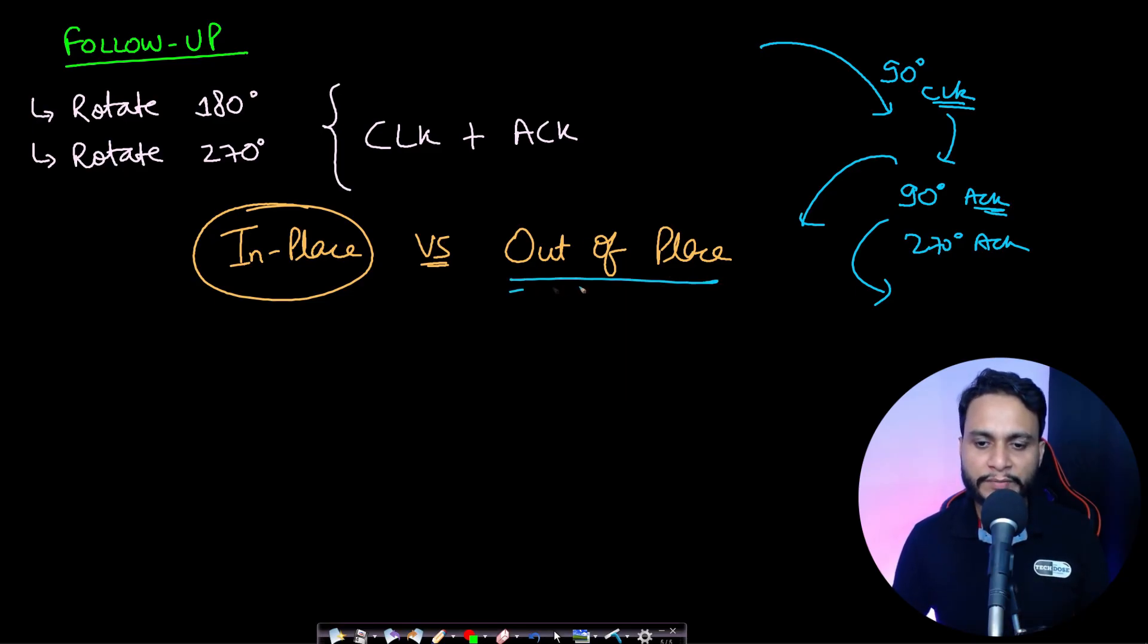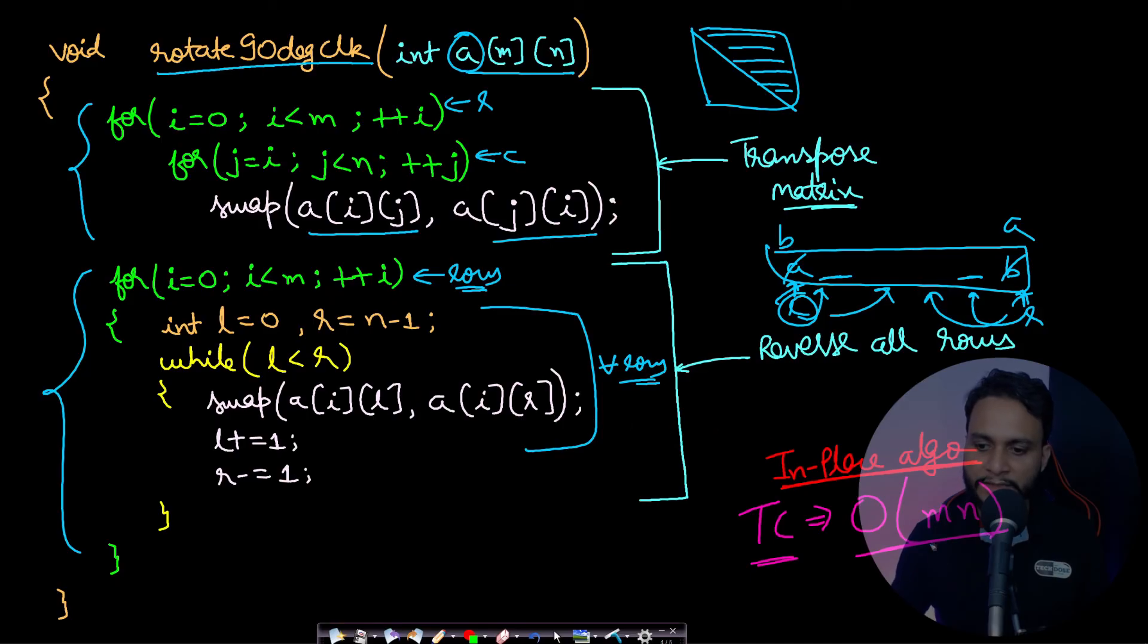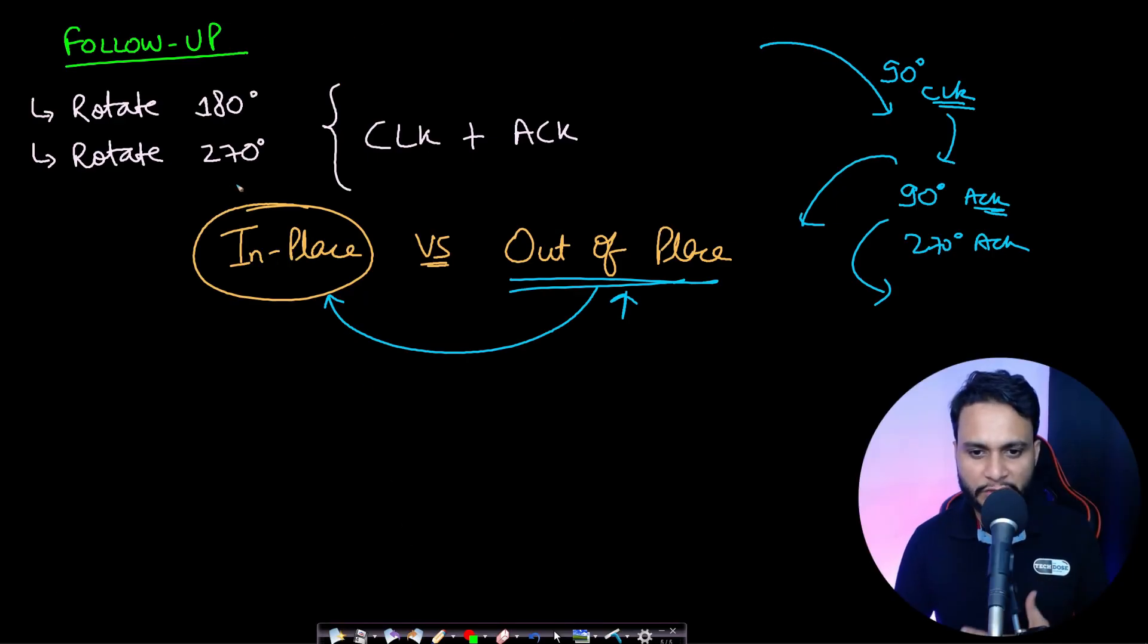You can also be asked about if you have solved the problem with an out-of-place algorithm, then you can be asked about a better approach. So a better approach would be the one which doesn't take up any space, so your space complexity should be order of one. In this case, our time complexity was order of M into N with no space complexity because this was in-place algorithm, one of the best. In the next video we will discuss in detail about these follow-up problems as well.